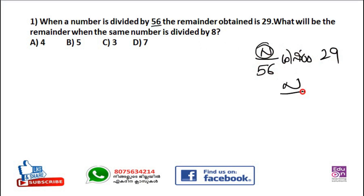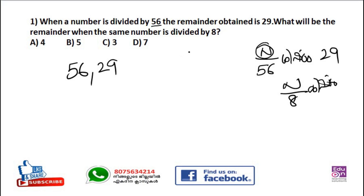We have to find the remainder when you divide the same number by 2 in the system. If you look at number 5, I will tell you the same number. The number is 56. I will tell you a shortcut method. In this case, we have divided by 5 and 6.